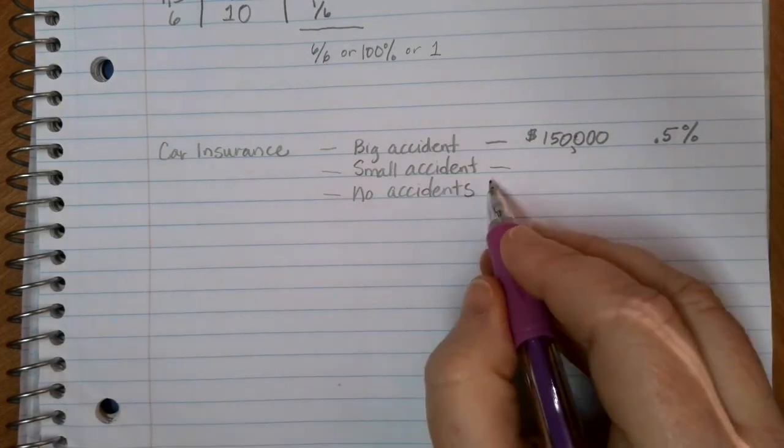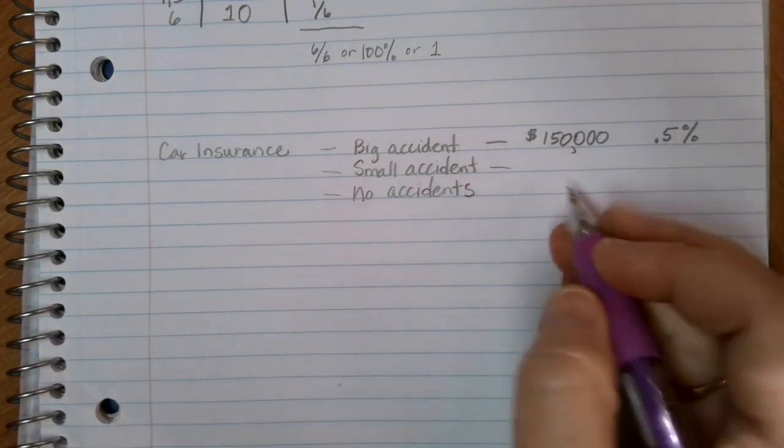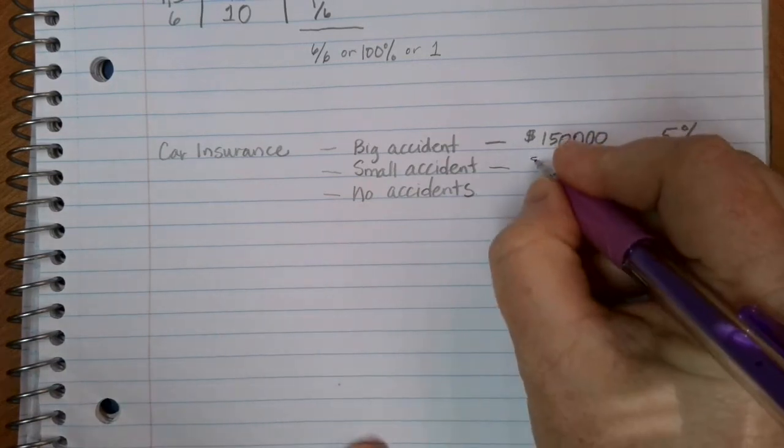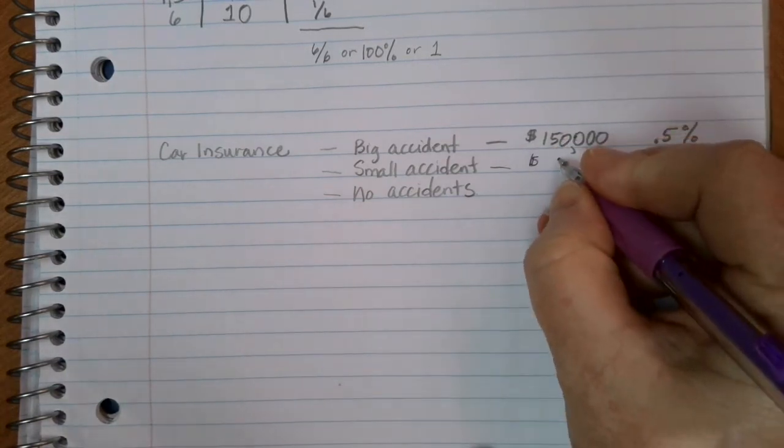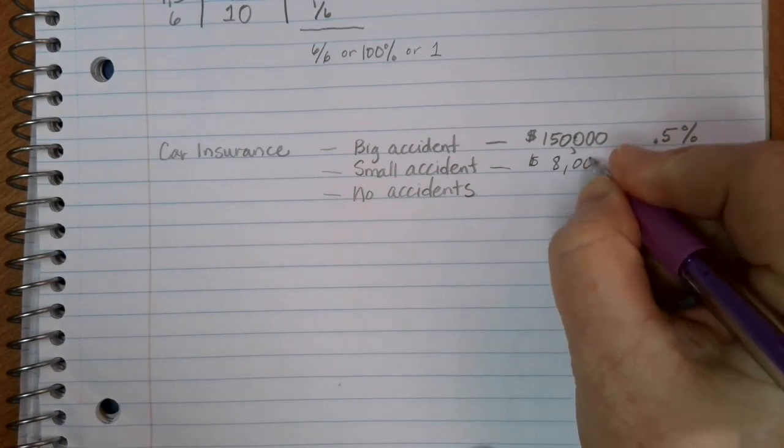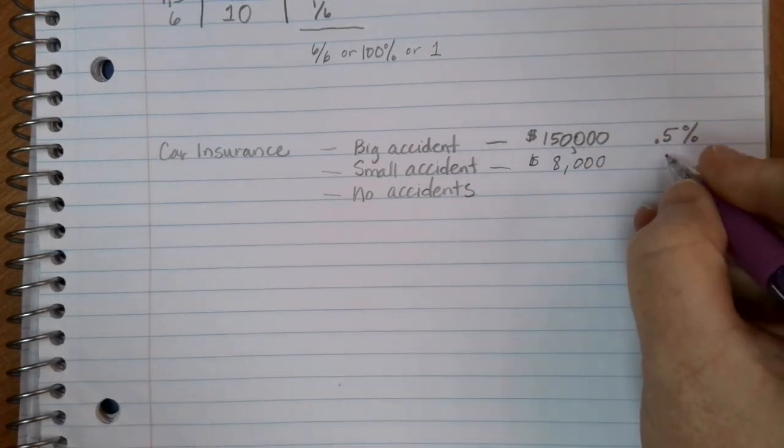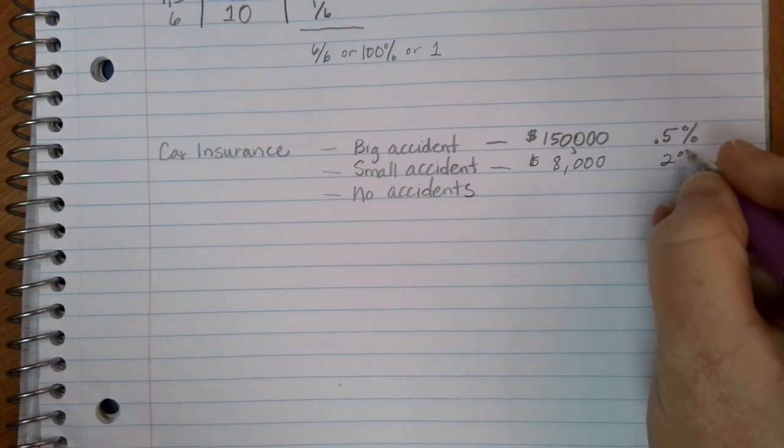A small accident would be some of those fender benders. You've got some small damage, you've got some other things that are going. And let's say that the average small accident insurance claim is for about $8,000. And the chances of maybe someone getting in a small accident are 2% per year.